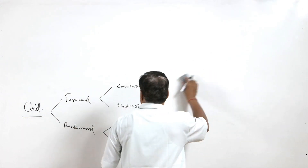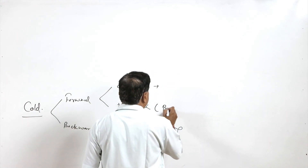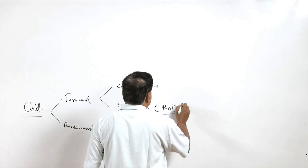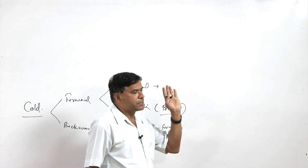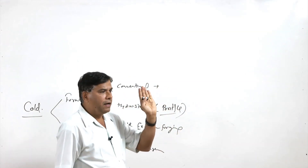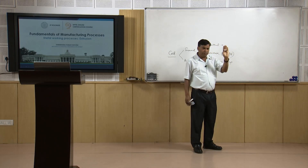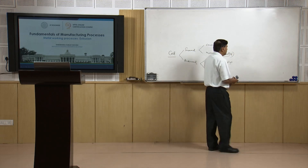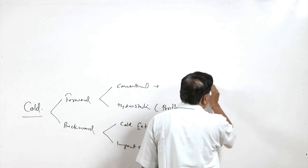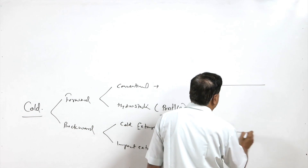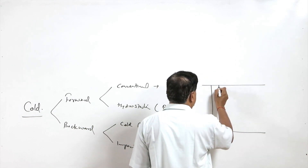Coming to hydrostatic extrusion, this is mainly used for brittle materials. In conventional extrusion the force is applied from one side and under pressure the metal flows out. In hydrostatic extrusion one end is movable and the container is filled with fluid.